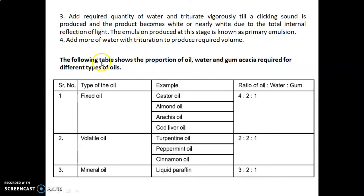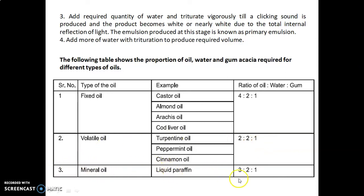Add more water with trituration to produce the required volume. The proportion of oil, water, and gum acacia required for different oil types: fixed oils (e.g., castor oil, almond oil, arachis oil, cod liver oil) — ratio 4:2:1; volatile oils (e.g., turpentine oil, peppermint oil, cinnamon oil) — ratio 2:2:1; mineral oil/liquid paraffin — ratio 3:2:1.